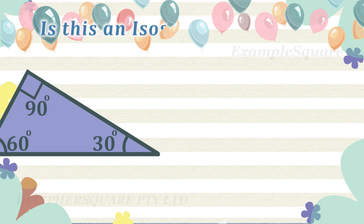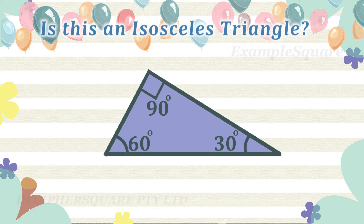Is this an isosceles triangle? No, this is not an isosceles triangle. As the two interior angles shown are not equal — as in this example, none of its angles are equal. In an isosceles triangle, the two angles opposite to the two equal sides are equal.